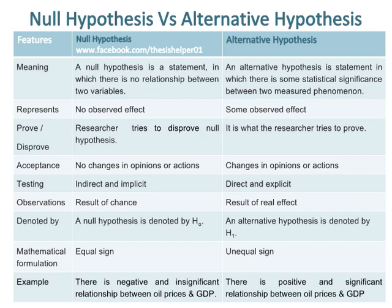A researcher tries to disprove the null hypothesis, while the alternative hypothesis is what the researcher tries to prove. The acceptance of a null hypothesis is based on no changes in opinions or actions, while the acceptance of the alternative hypothesis is based on changes in opinions or actions.